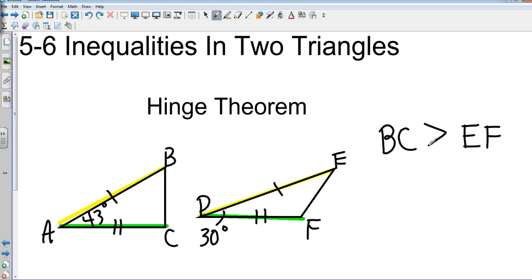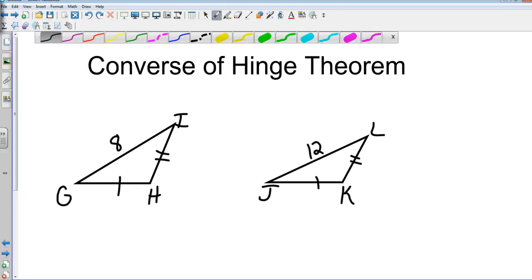Because BC is opposite the bigger angle, that means BC is going to be greater than EF. If you have corresponding sides that are connected, it's almost like side-angle-side, but the angles are not congruent to each other, which means BC has to be greater than EF. With the hinge theorem, there's also a converse of the hinge theorem.